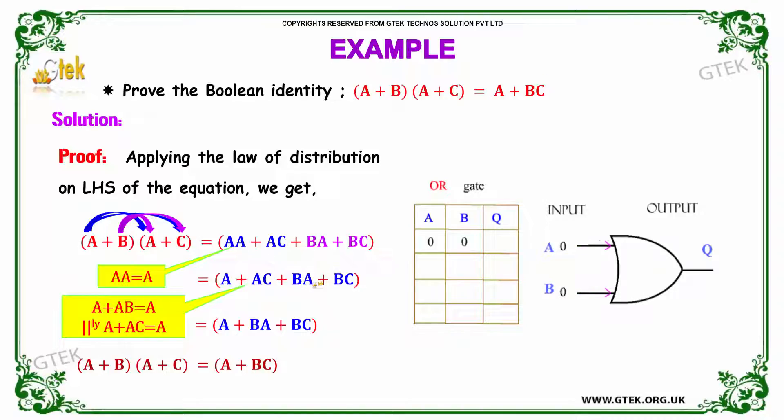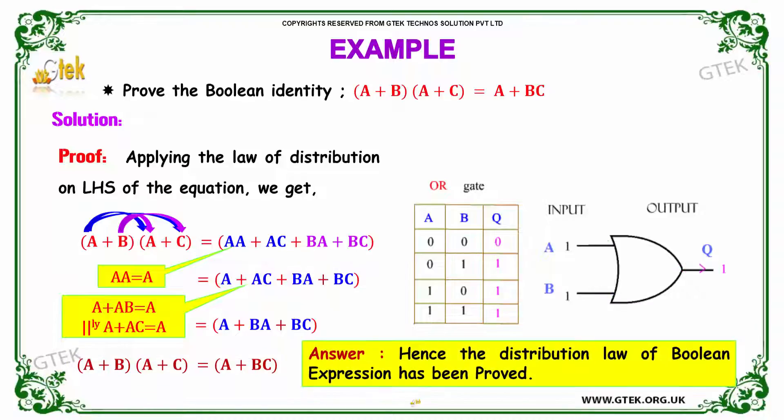You got, so parallelly A plus AC is equal to A. You got A plus AC is equal to A plus BA plus BC. Obviously, once again A plus BA will become A once again. So A plus BC. A plus B into A plus C is equal to A plus BC. Hence, the distribution law of Boolean expression have been proved.